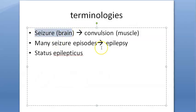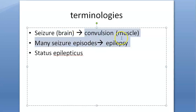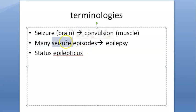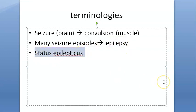What is a seizure? A seizure is an abnormal brain activity, and this can lead to convulsions. Convulsions is a muscle activity. When there are many episodes of seizures, you can term it as epilepsy, which is a disease. And if there is epilepsy which is continuous and not stopping in 30 minutes, then it is status epilepticus, which is an emergency.